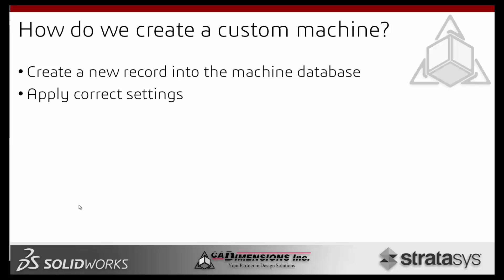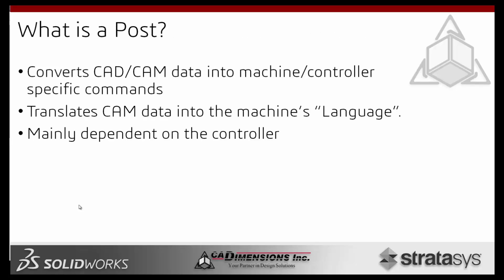To create a custom machine, you go into the technology database, create a new record, and apply all its settings including post information, spindle speed, and more. What is a post? A post is basically a link between the language your machine uses and the CamWorks language — it translates the CAM data into the machine's language. It's mainly dependent on the controller, since the controller is what actually runs the machine. We're trying to convert the CamWorks data to speak with the controller.